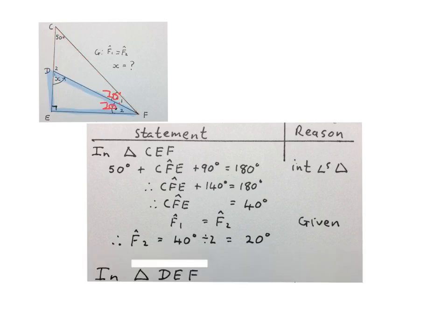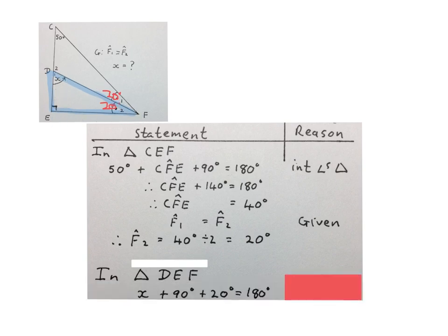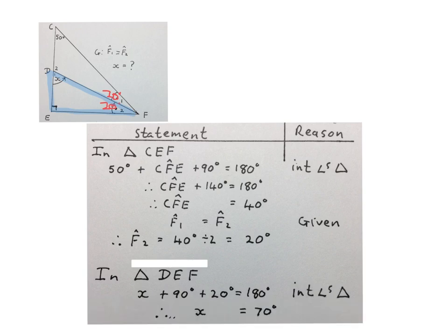Next, we go into the inner triangle DEF — the blue triangle. We write: X plus 90 degrees plus 20 degrees equals 180 degrees. Reason: interior angles of a triangle. Subtracting 90 and 20 from both sides: X equals 70 degrees. Please stop the video and work through this solution yourself.